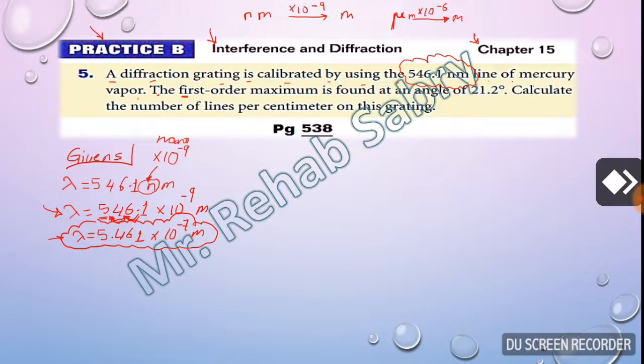The first order maximum. Here I have another given which is m equal 1, but be careful in maximum we use the order itself, but in minimum we have to subtract one from the given number. For example in interference, if he says the first minimum, the first dark fringe, we will say m equal zero. So m here is one, and because it's maximum we will use this formula: d sine theta equal m lambda.